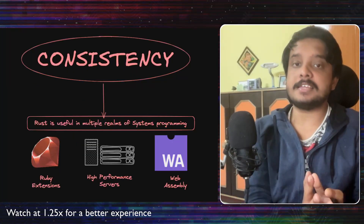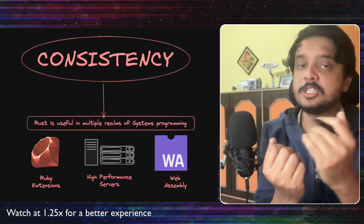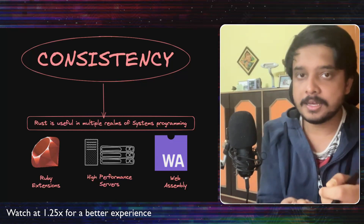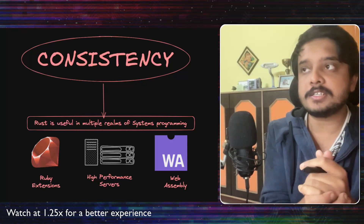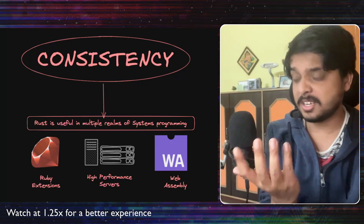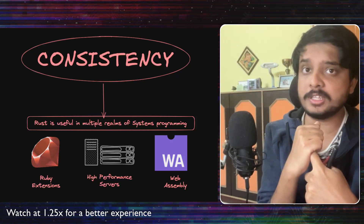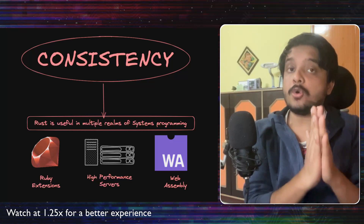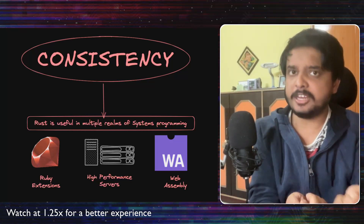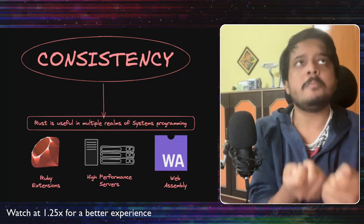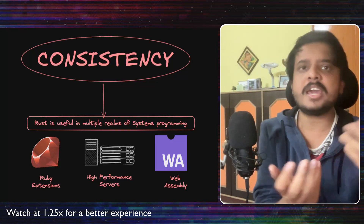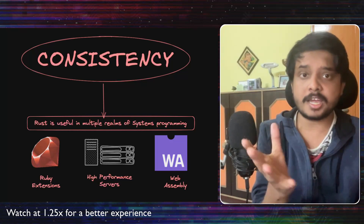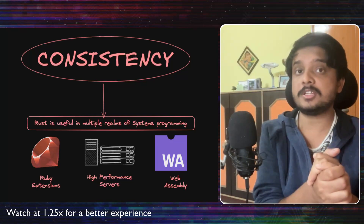The first reason is consistency. Systems programming can be spread across many domains — it's not a very tightly defined term for a particular use case. The example Shopify gives is that their systems programming is spread across building new extensions with native code for Ruby, high performance servers, and WebAssembly. Rust is a language that checks all these boxes, and not many languages do. Maybe C or C++, but they have other problems we will discuss. Shopify got this consistency from Rust and they were really happy with it.